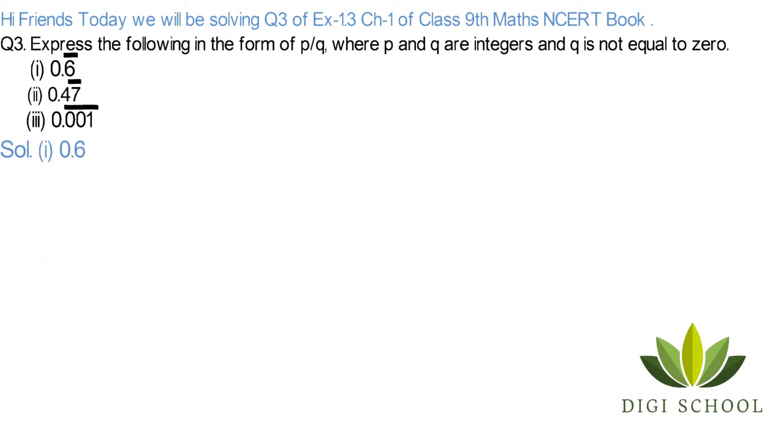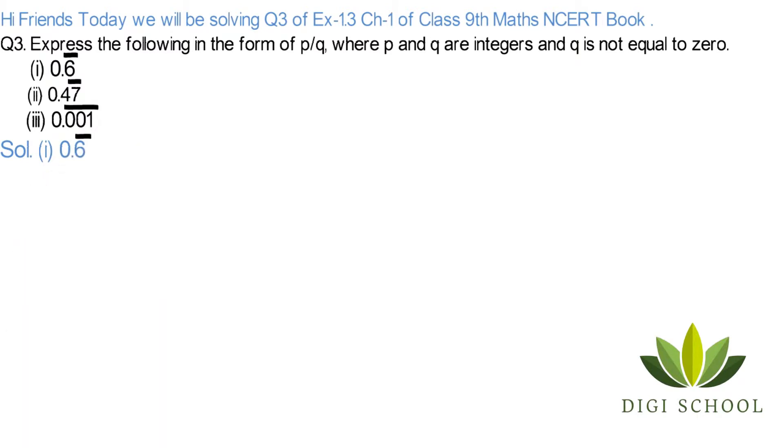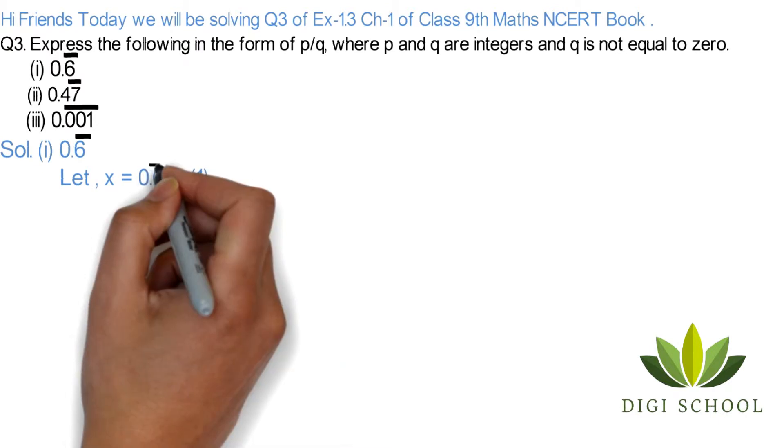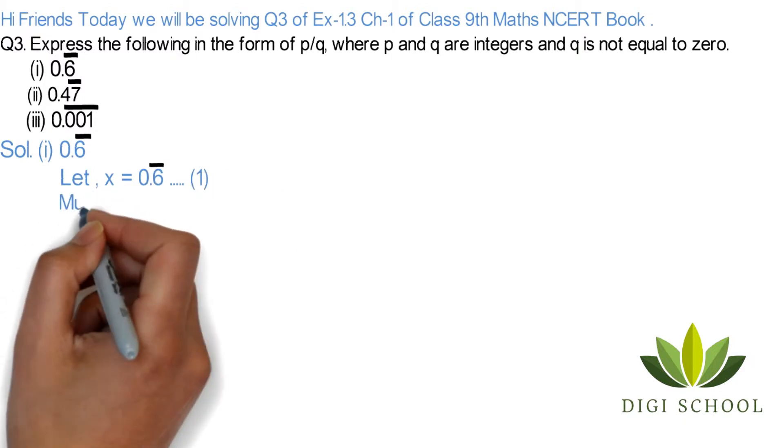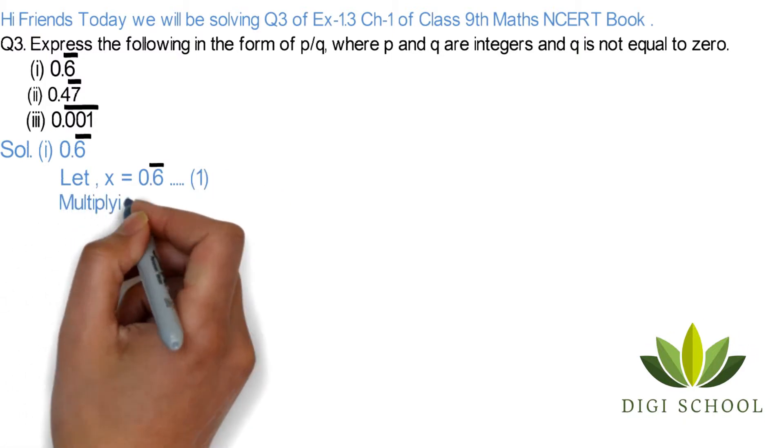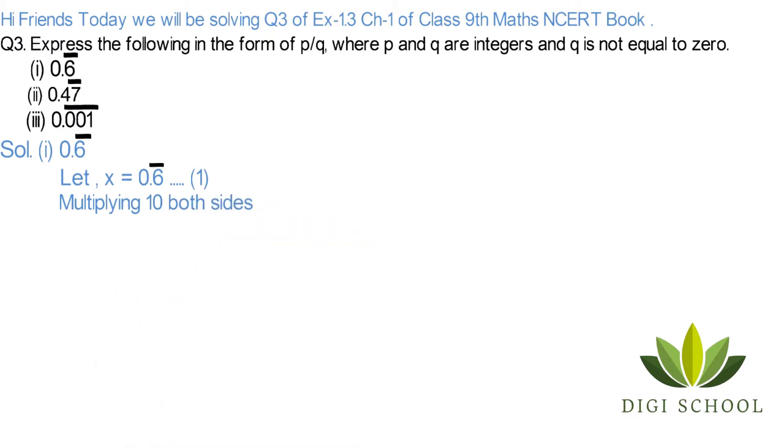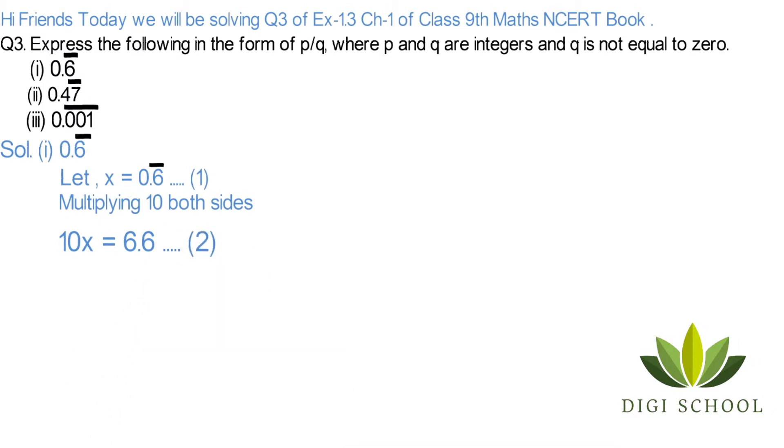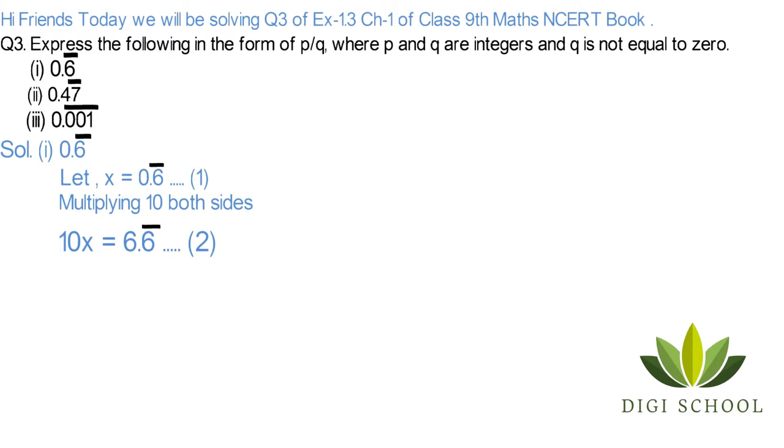First solution. So friends, as we know, we will let x equal 0.6 bar. Multiply both sides by 10. We will multiply x by 10 and 0.6 by 10. The result will be 10x equals 6.6 bar. This will be equation 2.